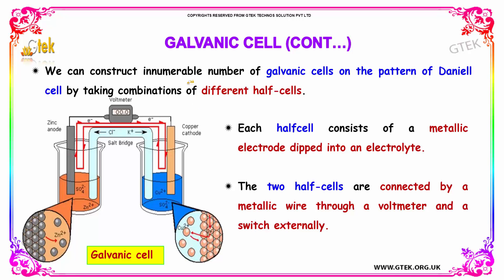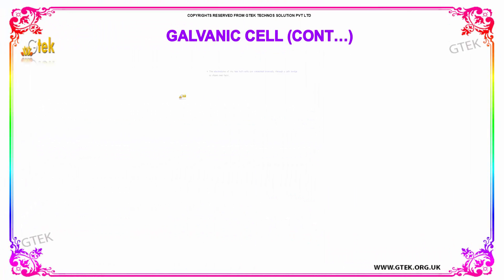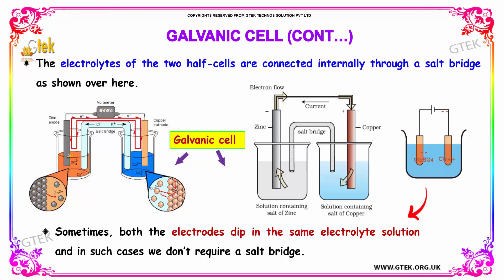We can construct numerous galvanic cells on the pattern of the Daniel cell by taking combinations of different half cells. Each half cell consists of a metallic electrode dipped into an electrolyte. The two half cells are connected by a metallic wire through a voltmeter and a switch. The electrolytes of the two half cells are connected internally through a salt bridge. Sometimes both electrodes dip into the same electrolyte solution, in which case a salt bridge is not required.